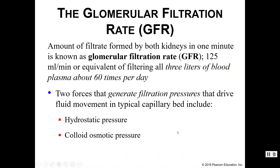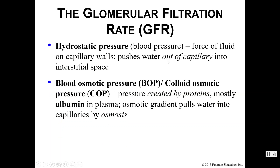We can actually measure some things here. The amount of filtrate formed by both kidneys in one minute is your glomerular filtration rate, your GFR. On average this is about 125 milliliters per minute, or the equivalent of filtering all three liters of blood plasma about 60 times per day. Two things that help drive that rate are your hydrostatic pressure and your colloid osmotic pressure. Your hydrostatic pressure is basically your blood pressure — it's what pushes fluids out of the capillary into the interstitial or capsular space.